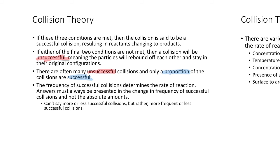There are lots of collisions, but only a proportion of them are successful — maybe 50%, maybe 60%, maybe 20%. The frequency of successful collisions determines the rate of reaction. When you answer questions about collision theory, you must refer to the frequency of successful collisions, not absolute amounts. You can't say 'more or less successful collisions' — rather say 'more frequent or less frequent successful collisions.'